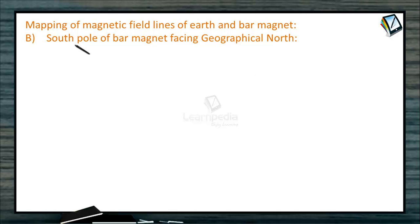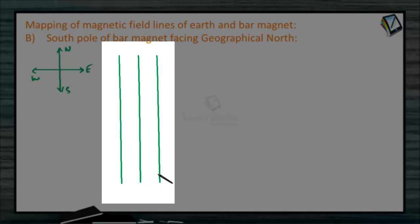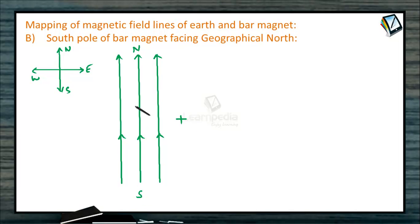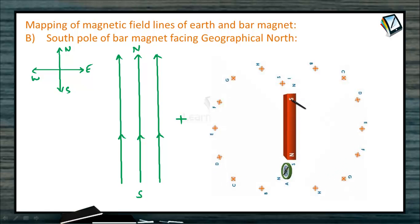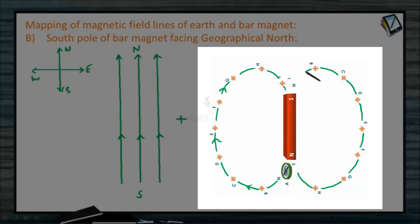Case two: mapping of magnetic field lines of Earth and bar magnet, this time with the south pole of the bar magnet facing geographical north. Taking north, south, east, and west as reference — Earth's magnetic field lines drawn with the compass extend from geographical south to geographical north. For the bar magnet, with south pole here and north pole here, the lines extend from north pole toward the south pole.